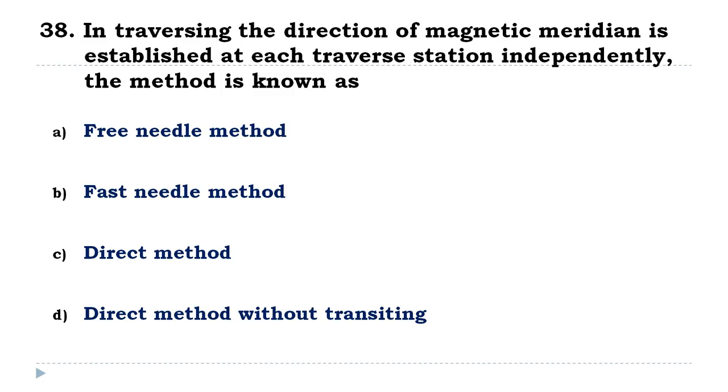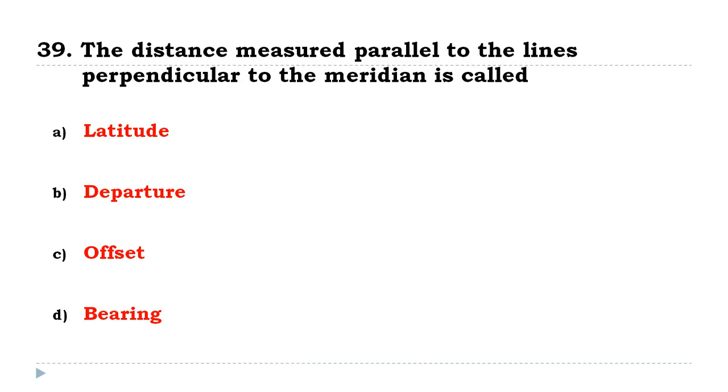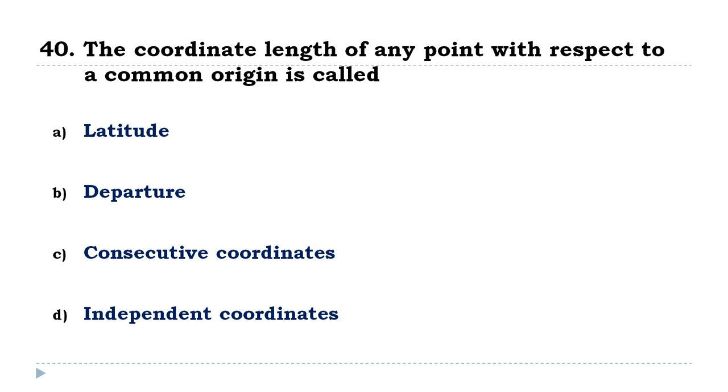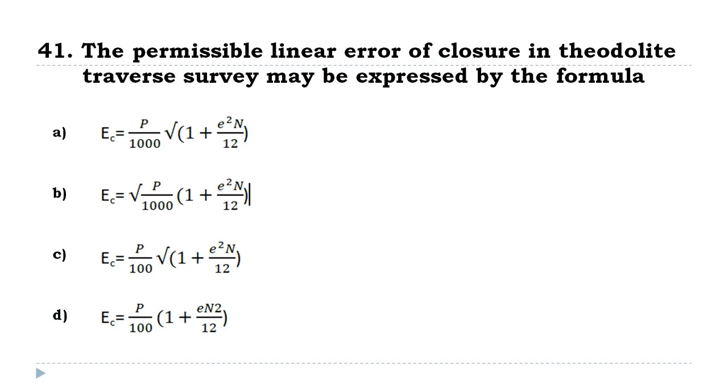In traversing, the direction of magnetic meridian is established at each traverse station independently; the method is known as free needle method. The distance measured parallel to the lines perpendicular to the meridian is called departure. The coordinate length of any point with respect to a common origin is called independent coordinates. The permissible linear error of closure in theodolite traverse survey may be expressed by the formula ec equals p divided by 1000 times root of 1 plus e squared n divided by 12.